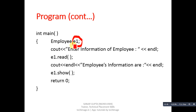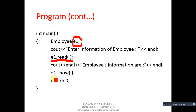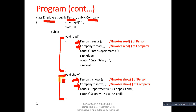Then calling the read function on the object will call the read function of Employee class, which in turn calls the Person class read function, then Company class read function, and then department and salary are read from the console. When the show function is called on the object, it calls the show function of Employee class — which first calls show of Person, then show of Company, and then department and salary are displayed on the console.